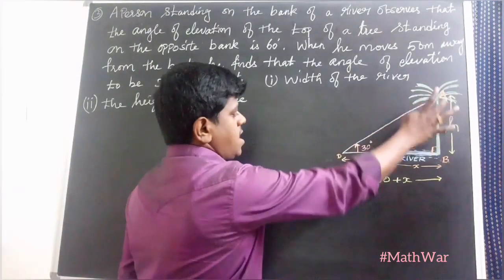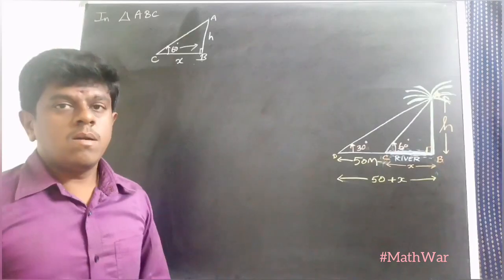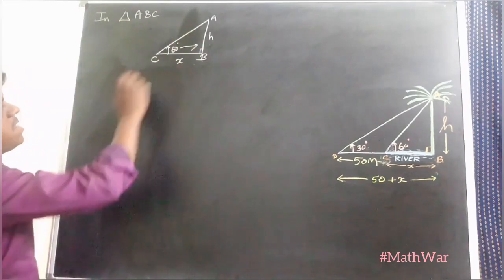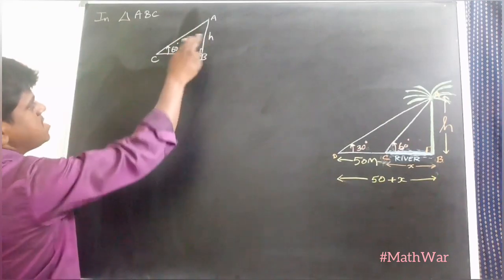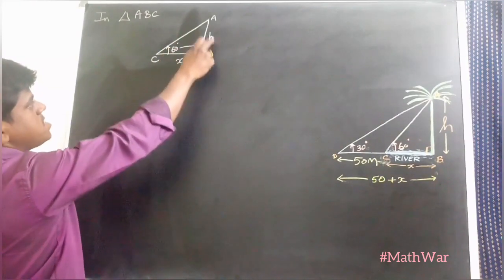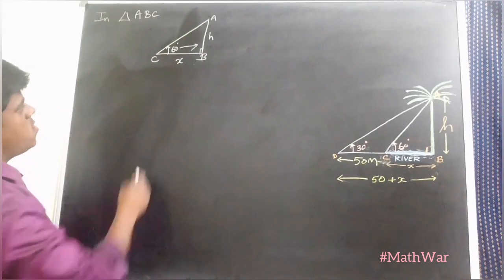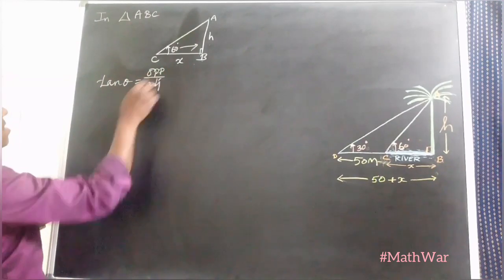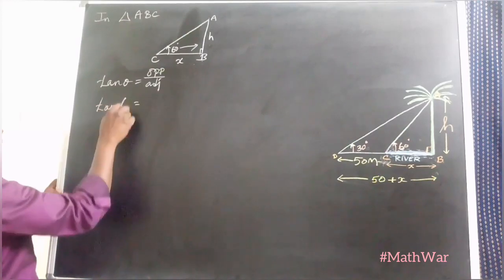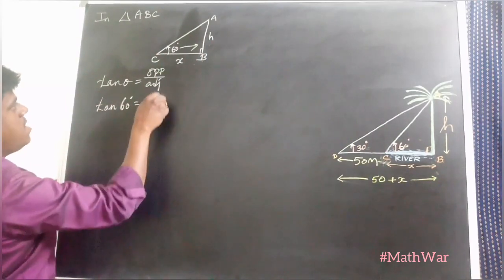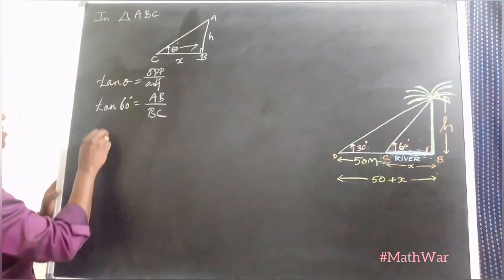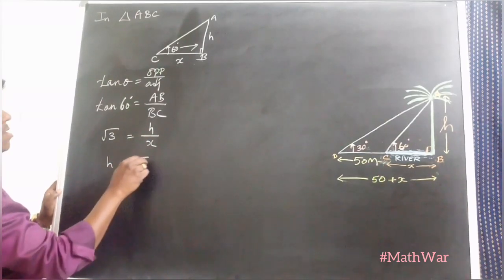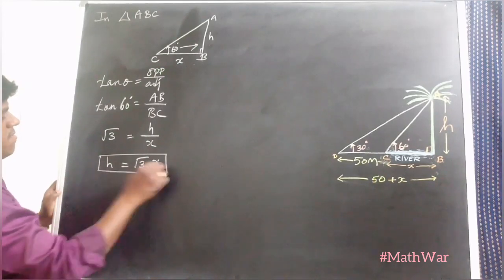We have two triangles: ABC and ABD. For triangle ABC, angle at C is 60°; opposite side is H and adjacent side is X. Using tan 60°: tan 60° = AB / BC, so √3 = H / X, giving H = √3·X. This is the first equation.